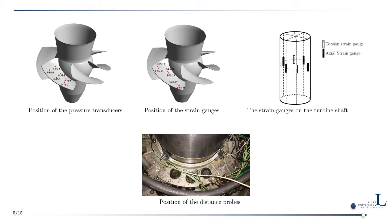In total, 12 pressure sensors were used — six on the pressure side and six on the suction side of the blade. Additionally, 12 strain gauges in three different radial and tangential locations were installed on both pressure and suction sides. On the shaft, four axial strain gauges and two torsion strain gauges measured axial load, bending in two directions, and shaft torque. Distance probes were positioned close to the turbine guide bearing.